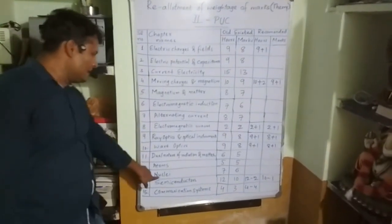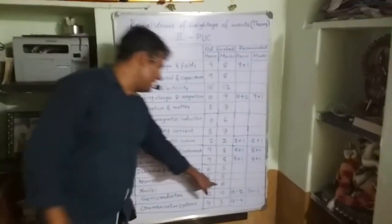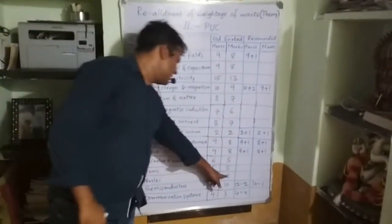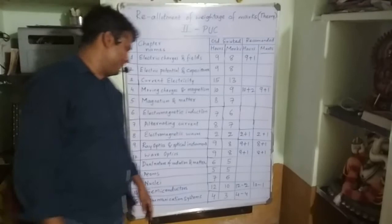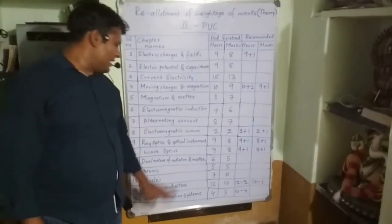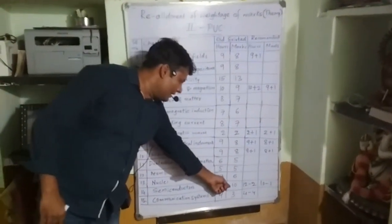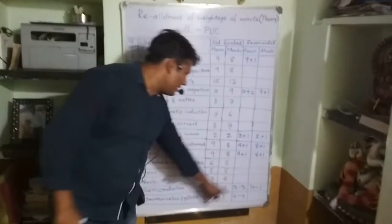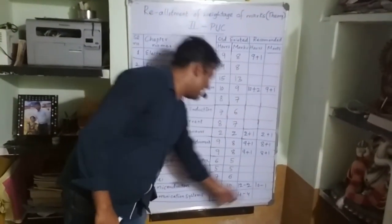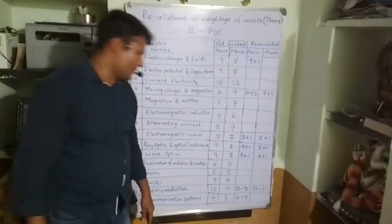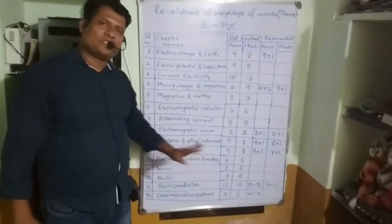The thirteenth chapter, Nuclei, carries seven hours of teaching and six marks, with no changes in the recommended section. The fourteenth chapter, Semiconductors, has twelve teaching hours and ten marks weightage, and here there is a major change: twelve minus two hours means only ten hours are now allotted, and the marks weightage is ten minus one — that is nine marks for this chapter.